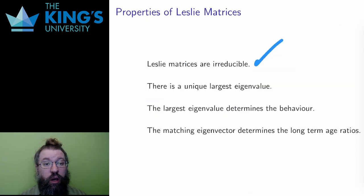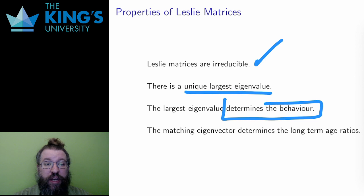Leslie matrices are irreducible. Recall that irreducibility meant that each state connects to each other. By survival and fertility, it is possible to pass from every age category to another over several time steps. This means there is a unique largest eigenvalue lambda with a positive eigenvector, and this is the value I'm going to care about. In the long run, this largest eigenvalue dominates, and its eigenvector gives the stable age distribution.